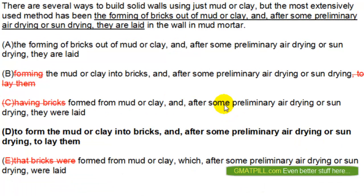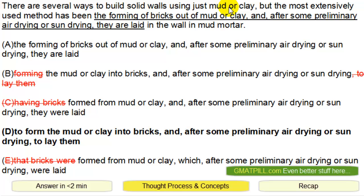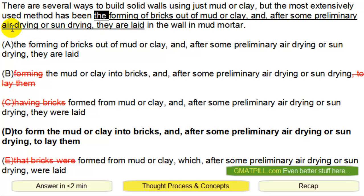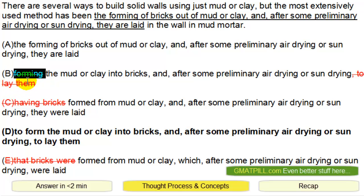In terms of concepts, we have one method that's presented, but the most extensive method has been this other method. The first method was using 'ing,' so forming something else is another way of saying it. We know the word 'the' should not be there, so that's why we considered B. But the issue with B is: we have keyword AND — on the left we have 'forming,' and on the right we have 'to lay.' So they are not consistent, and then we go to C.